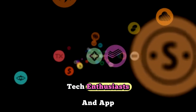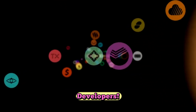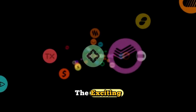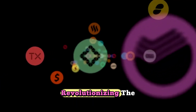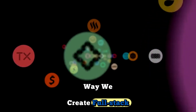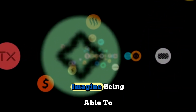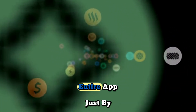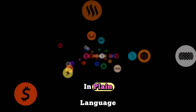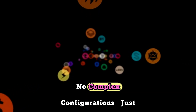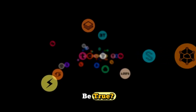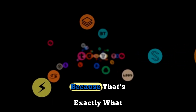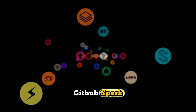Hey there, tech enthusiasts and app developers! Today, we're diving into the exciting world of GitHub Spark, a groundbreaking tool that's revolutionizing the way we create full-stack applications. Imagine being able to build an entire app just by describing it in plain language — no servers, no complex configurations, just type and watch your idea come to life. Sounds too good to be true? Well, buckle up, because that's exactly what GitHub Spark does.